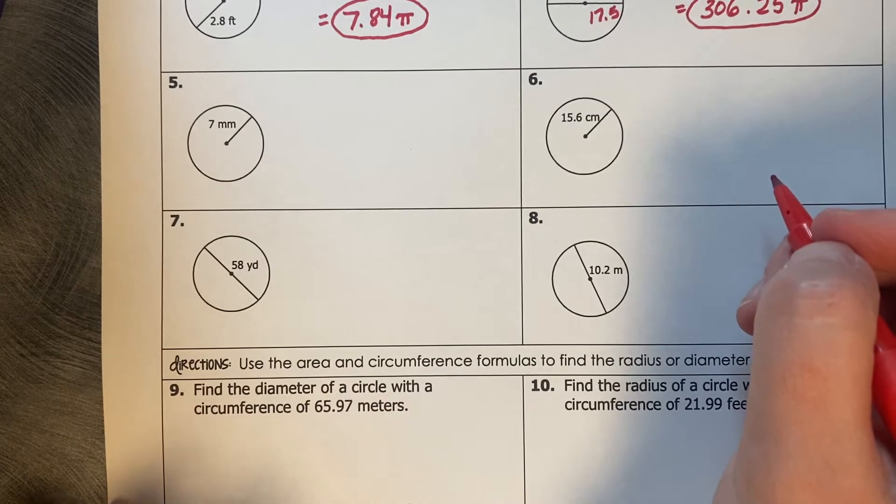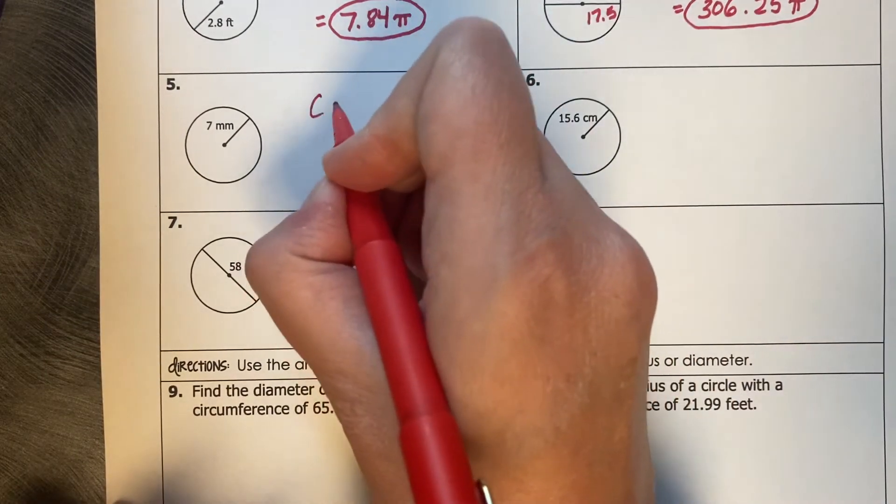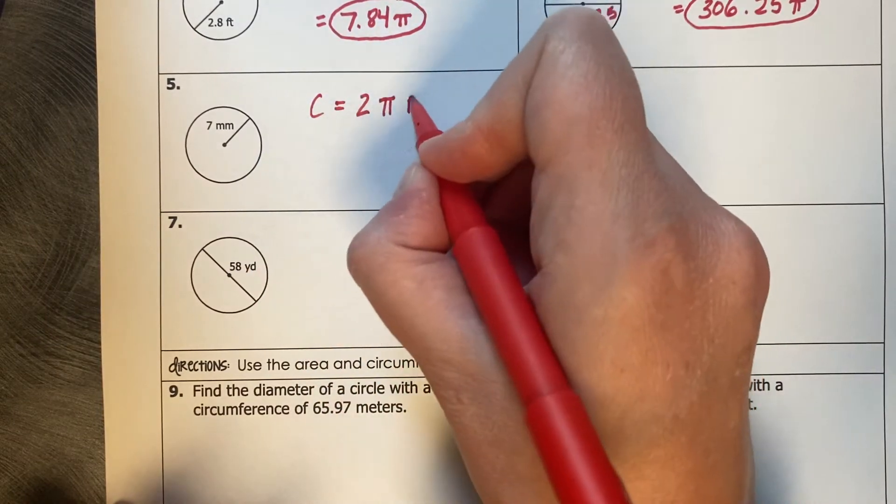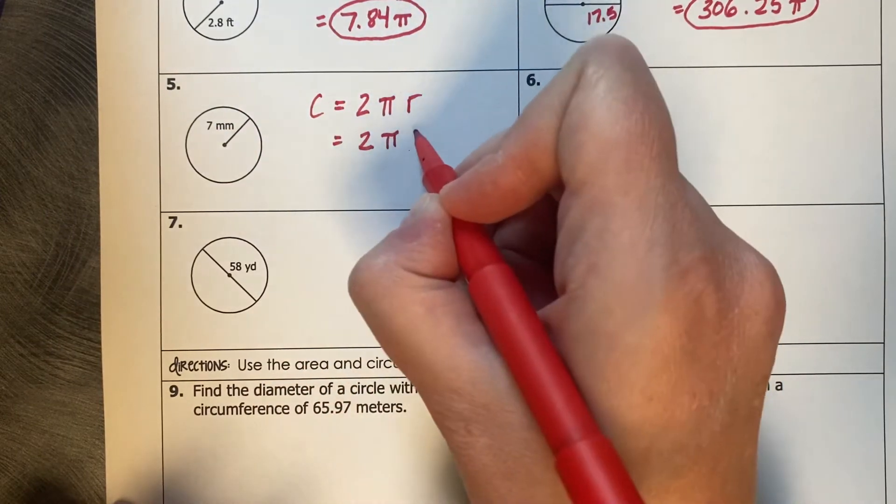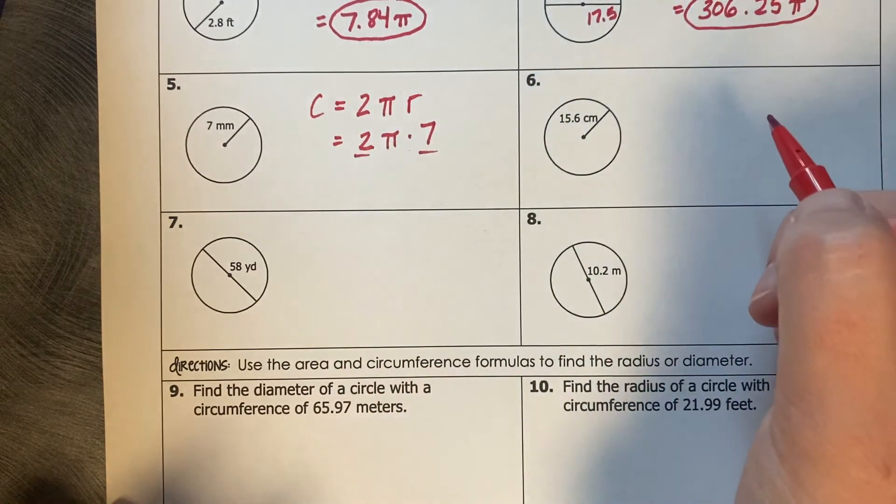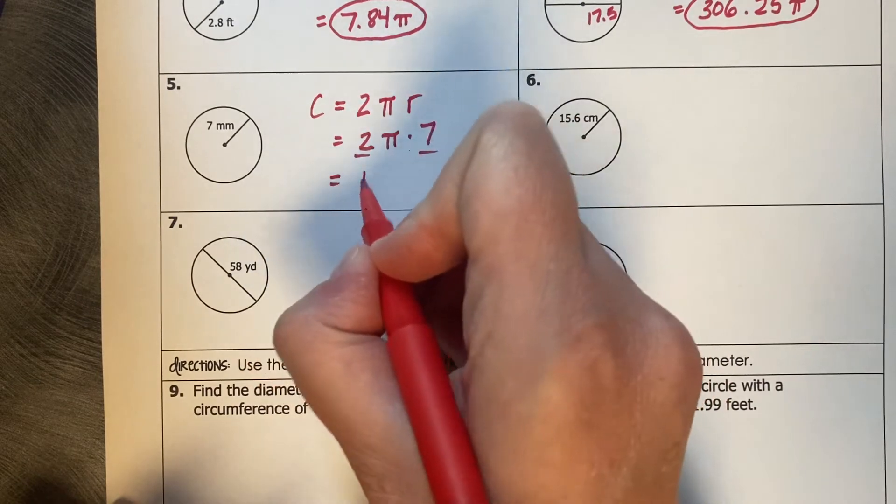Now I would like us to calculate the circumference of each of these. So the circumference is 2 times pi times radius. Our radius here is 7, so 2 times pi times 7. The 2 and the 7 are really what we're putting together to make our exact answer. The 2 and the 7 make a 14 pi.